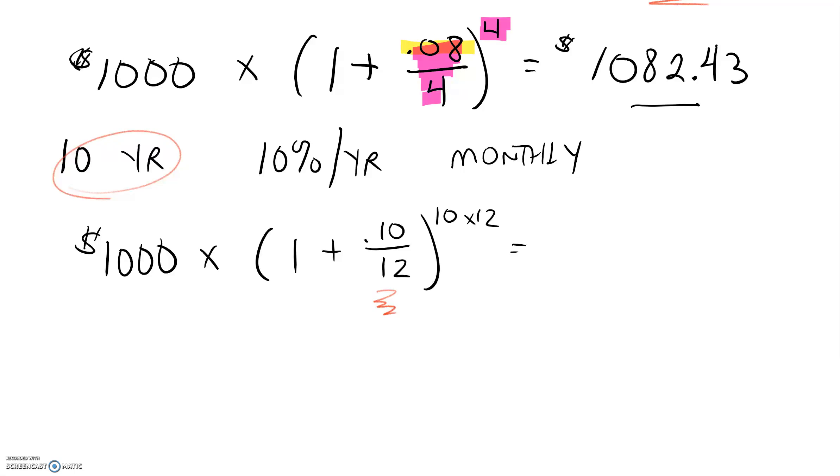So I'll take 0.1 divided by 12 in the calculator, add 1 to it, raise it then to the 120th power, and take that and multiply it by a thousand. And that'll give me a total of $2,707.04. And that's how much we'll have.